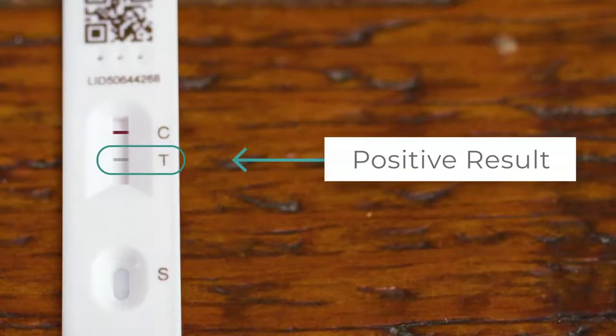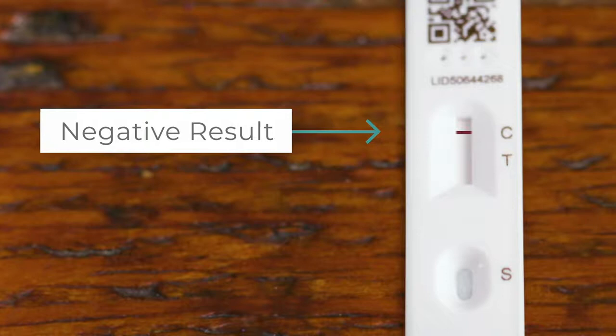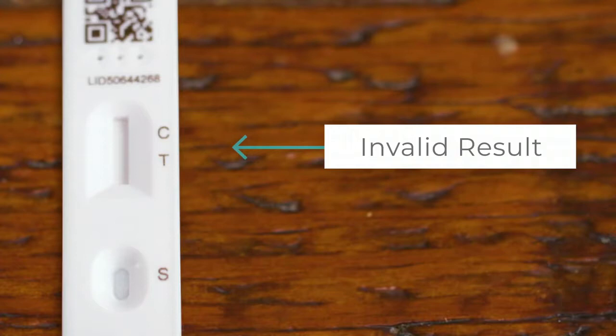If only the control line, the C line appears, then the result is negative. The control line indicates a valid result and should always be present. If it isn't, then the test is invalid. Repeat the test with a new test cassette.